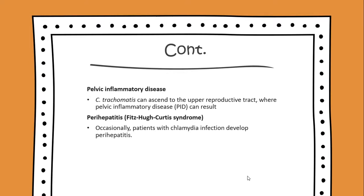Pelvic inflammatory disease is another complication, where C. trachomatis can ascend to the upper reproductive tract, resulting in pelvic inflammatory disease. And lastly, perihepatitis, also known as Fitzhugh-Curtis syndrome, where occasionally patients with chlamydia infection develop perihepatitis.